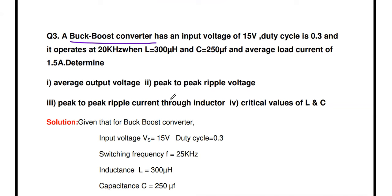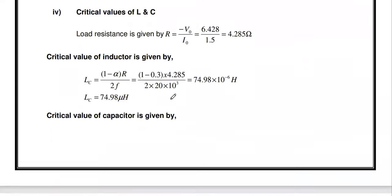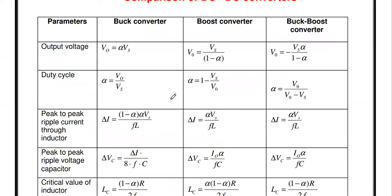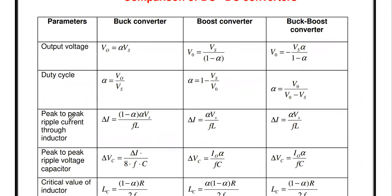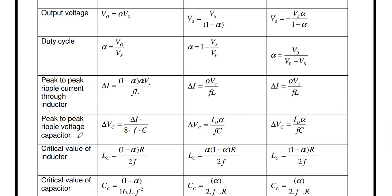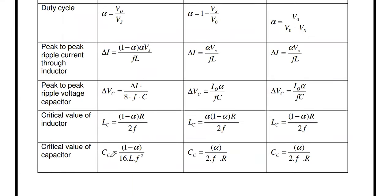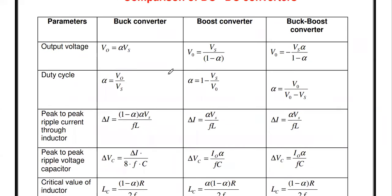We are going to see problems related to all three converters. To solve these problems, you should know the formulas. The terms they will ask in a problem are: duty cycle, output voltage, peak-to-peak ripple current through the inductor, peak-to-peak ripple voltage across the capacitor, and the critical value of inductor and capacitor.